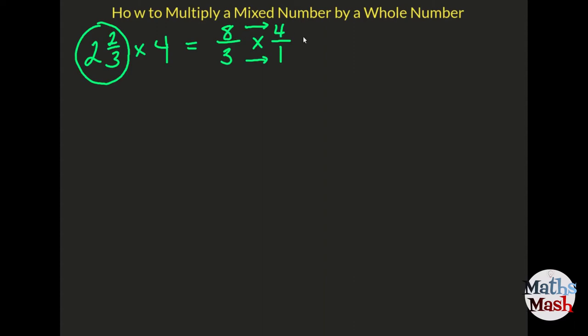So 8 times 4 is 32, and 3 times 1 is 3. And that's 32 over 3.